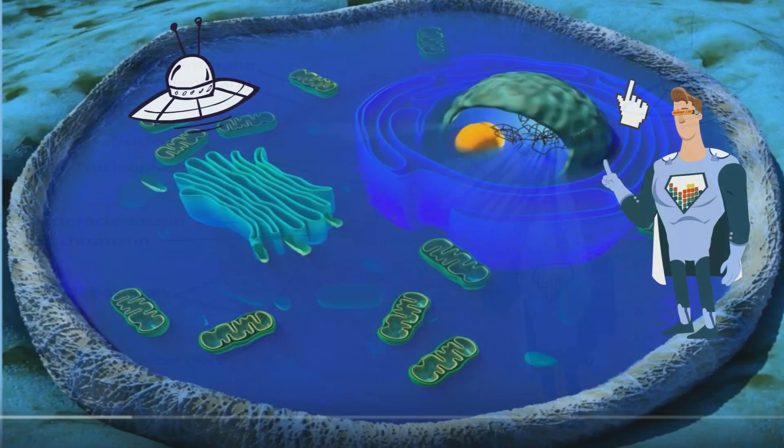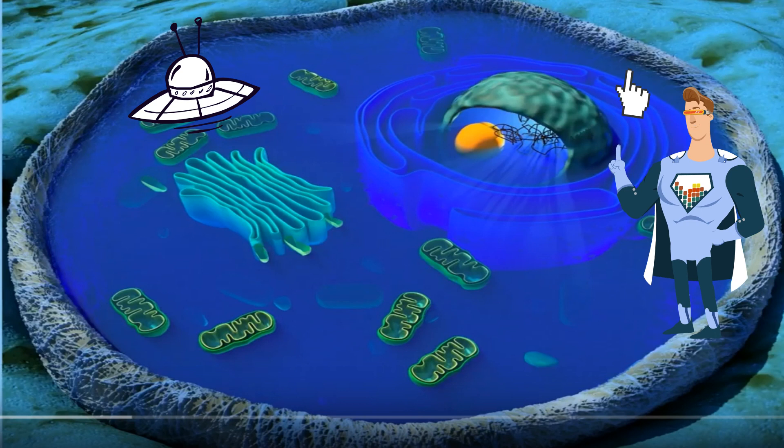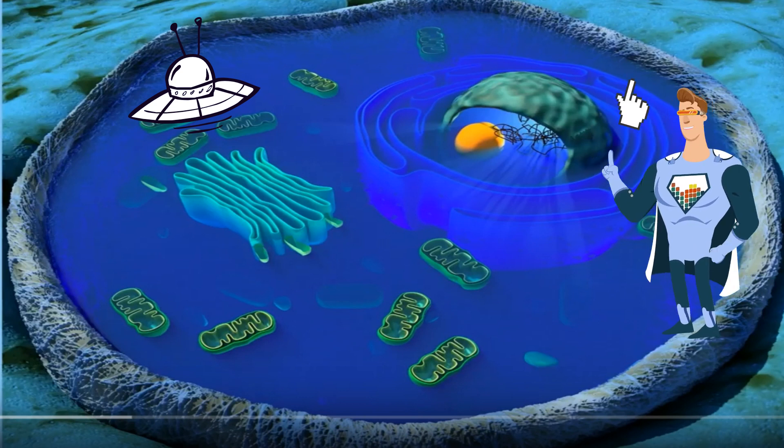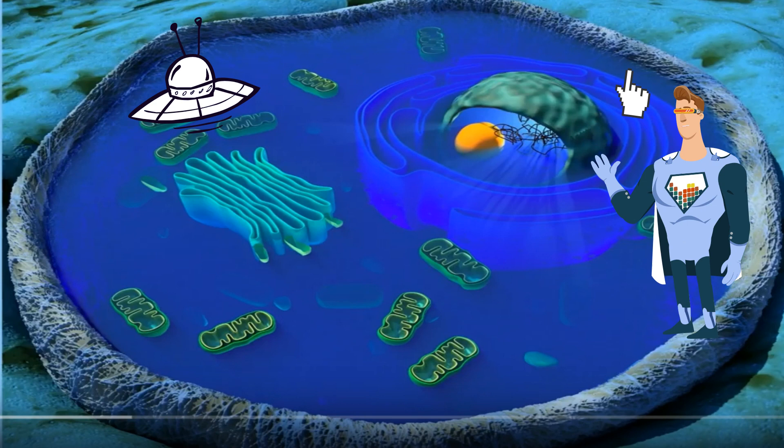Surrounding the cell is a cell membrane. It protects the cell and allows certain things to pass in and out of the cell. Here's what it looks like up close.